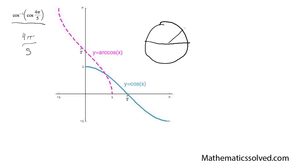So this is 4π over 5, it's probably going to be roughly about right here. If I plug in, I'm going to say this is just negative 0.8 as a crude estimate. So that's my answer — I get negative 0.8 at the top here, and then I plug this into my inverse function.